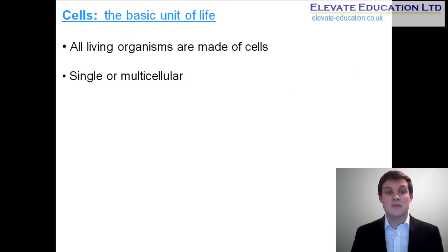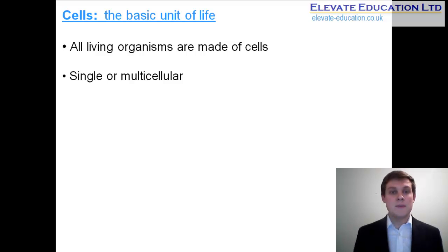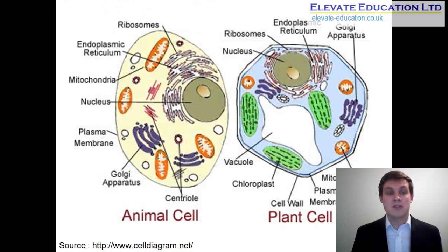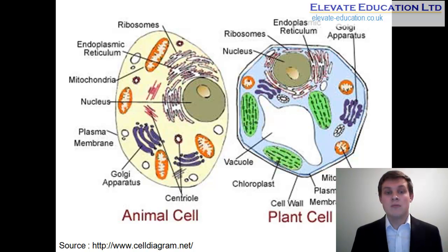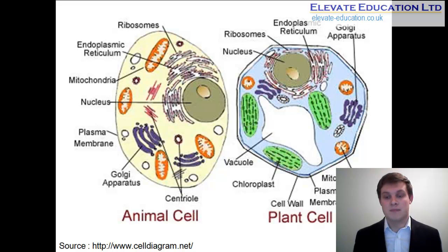All living things are made of cells, whether they be a single-celled organism such as an amoeba or a multicellular organism such as a plant or a human being. When we look at the diagrams of animal and plant cells we've used, they don't actually represent two real cells found in the real world. Rather, they're a generalized view that shows the various organelles that can be present within each type of cell.